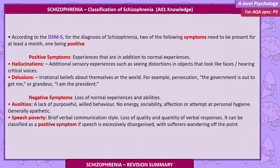Negative symptoms are the loss of normal experiences and abilities. Avolition is a lack of purposeful behaviour — no energy, sociability, affection or attempt at personal hygiene; generally apathetic. Speech poverty is a brief verbal communication style with loss of quality and quantity of verbal responses. It can be classified as a positive symptom if speech is excessively disorganised, with sufferers wandering off the point.